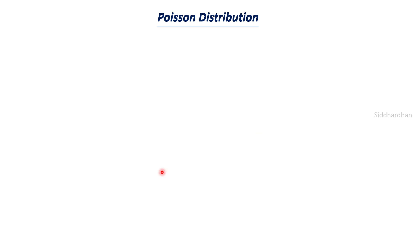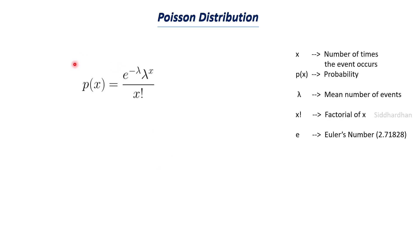Now let's understand this mathematically. There is a particular formula to find the probability. P(x) equals e to the power of negative lambda, multiplied by lambda to the power of x, divided by x factorial. This is the formula for Poisson distribution.